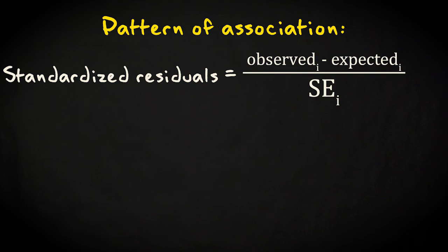The pattern of association in a contingency table can be analyzed by considering standardized residuals. These are calculated by the difference between observed and expected counts divided by the standard error of the residual and are interpreted in the same way as z-values.